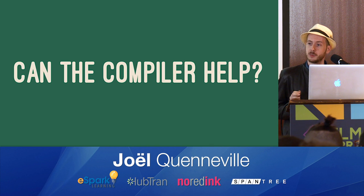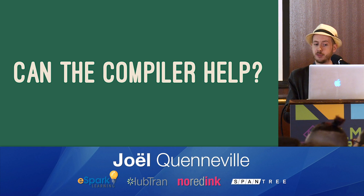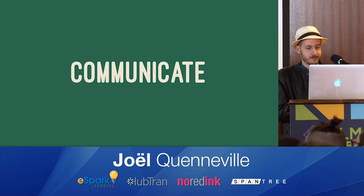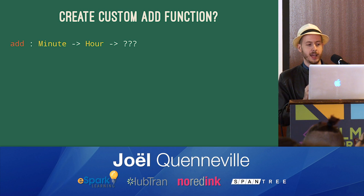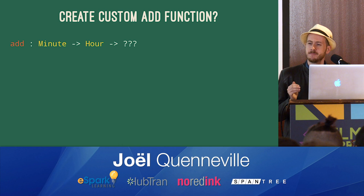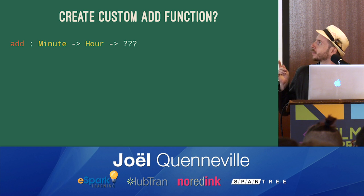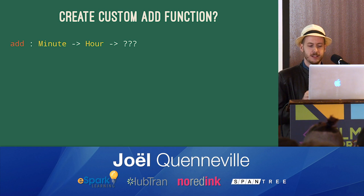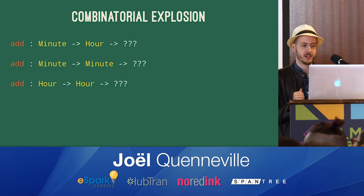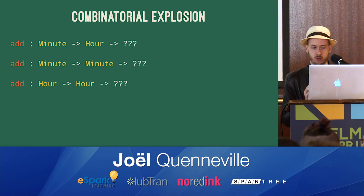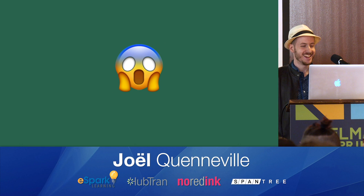We really want to return either 160 minutes or 2.67 hours. Well, can the compiler help us here? Yes. But as before, we need to communicate. So what might that look like? Maybe a custom type and an add function, kind of like we did before. So we'd say we add minutes and hours and get back — what do we want to get back there? Is it hours? Is it minutes? And actually, the more we think about it, we've got a bit of combinatorial explosion going on here. What if we want to add minutes and minutes or hours and hours? It's starting to feel a little not so great.